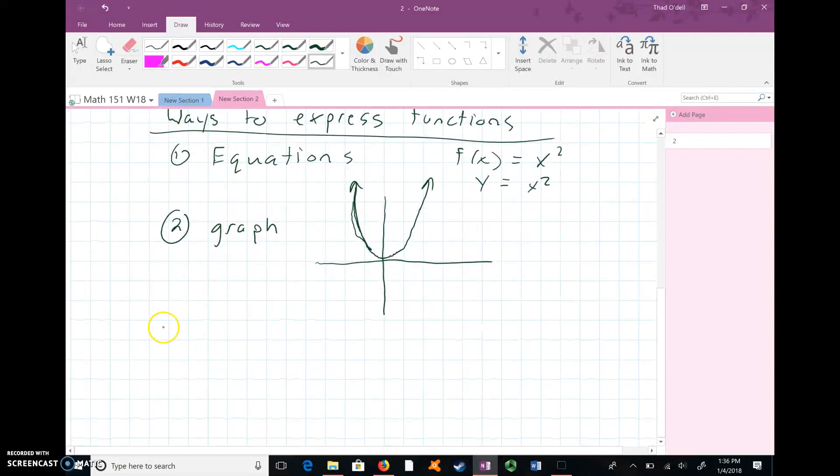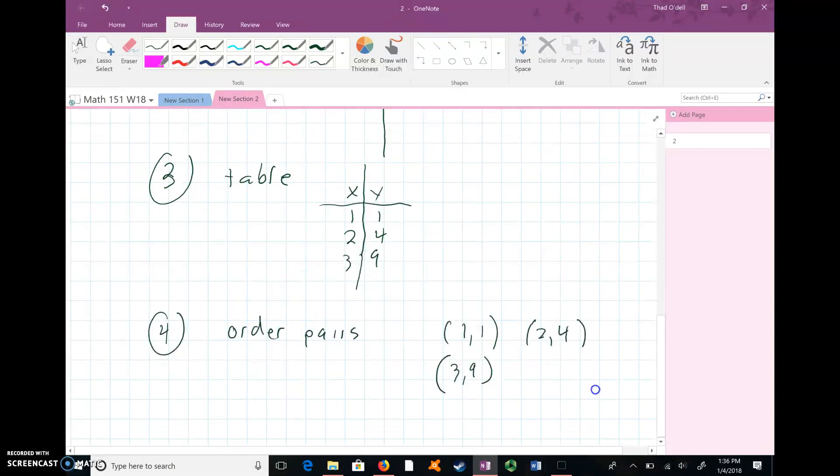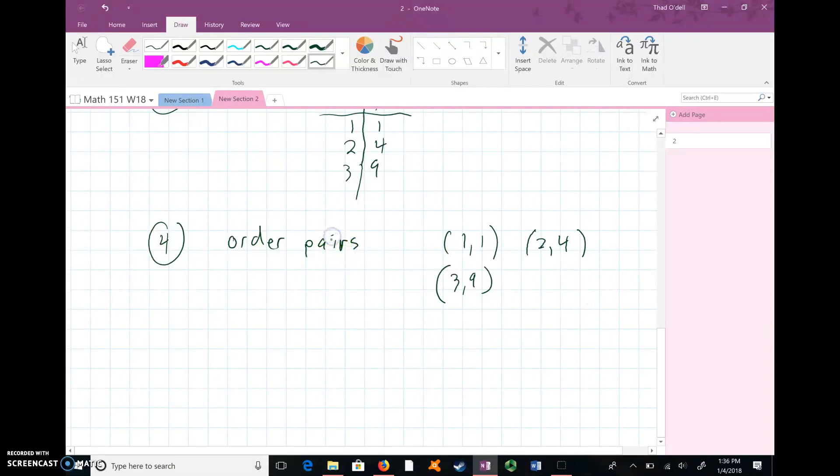We could also express a function using a table. We put an X and a Y here. You put in one, and you get out one. Put in a two, you get out a four. Put in a three, get out a nine. Another way to express a function - and I'm expressing the same function over and over again in different ways - you could use a set of ordered pairs. So like, for example, (1,1), (2,4), (3,9), etc.